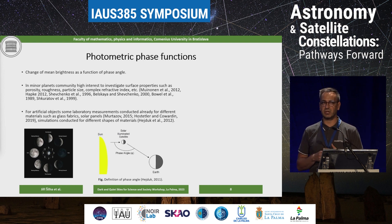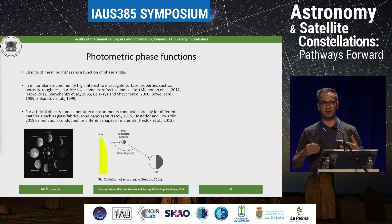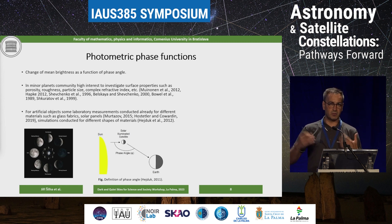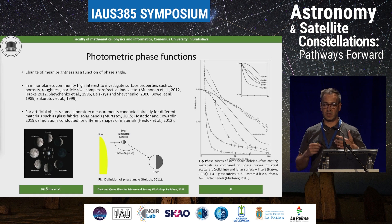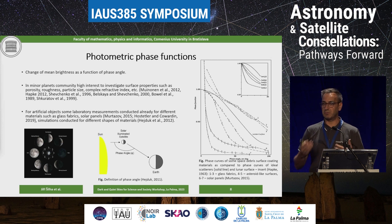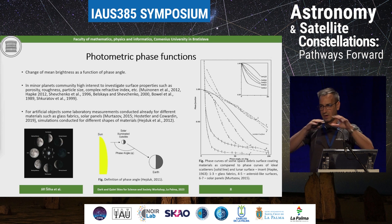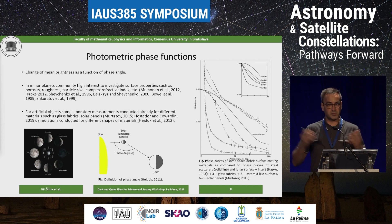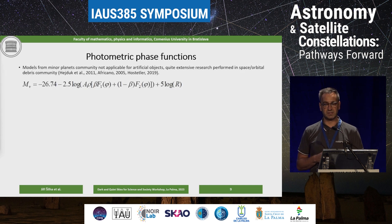The photometric phase function is very commonly used in the minor planet community, and similarly it is used in the space debris community to characterize objects. There have been several works in the last decades on phase functions for artificial objects, using simulations, laboratory measurements, and space-based materials — but laboratory results are not fully representative because objects are a combination of materials and complex shapes. We are focusing mostly on data acquisition and trying to understand how to represent them properly.